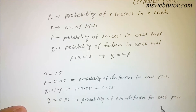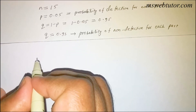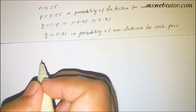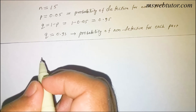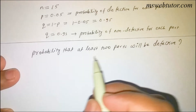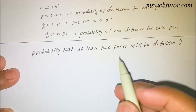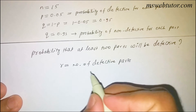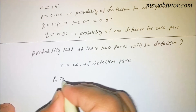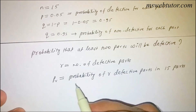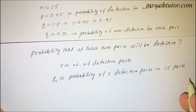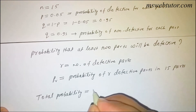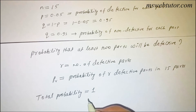We are given 15 parts and need to find the probability that at least two parts will be defective. 'At least two' means 2 or more parts are defective. So R is the number of defective parts and P(R) is the probability of R defective parts in 15. We will use the fact that the total probability is 1.